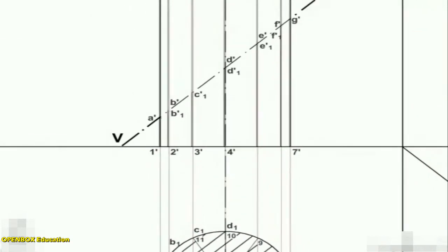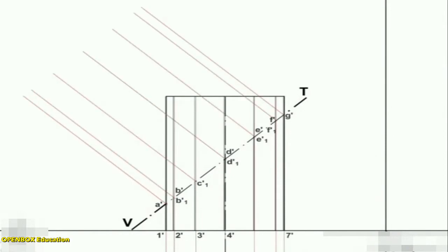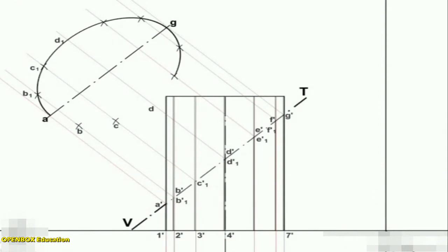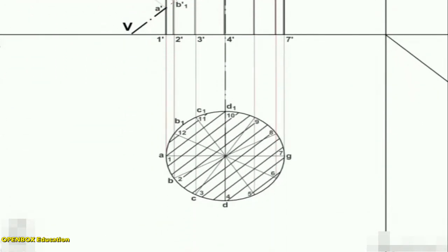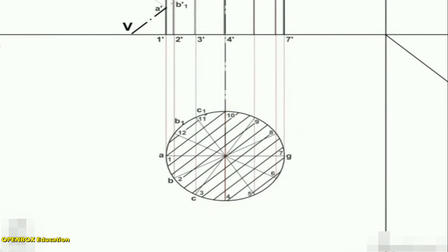The true shape of the section may be drawn around the center line AG drawn parallel to VT as shown. It is an ellipse, the major axis of which is equal to the length of the section plane that is A'G', and the minor axis equal to the diameter of the cylinder that is DD1.